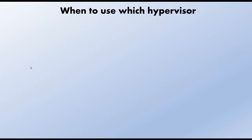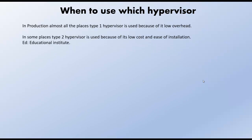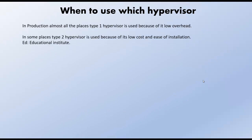When to use which hypervisor: type 1 hypervisor is mostly used in production environments where the speed of virtual machines matters a lot. If you need high performance and a scalable environment, you go for type 1 hypervisor. The biggest benefit of type 1 is low overhead because it is installed directly on the physical server. Type 2 hypervisor, on the other hand, is mostly used in educational institutions because of its low cost and ease of installation, but its overhead is very high since it runs on top of an operating system.